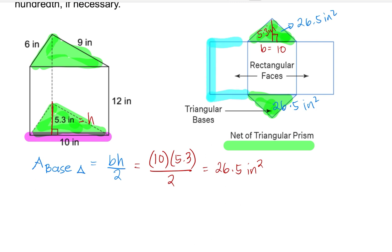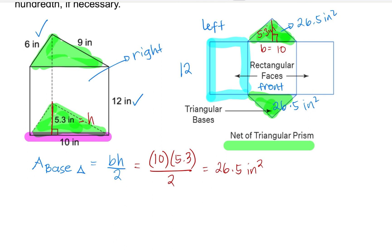One side is a rectangle. Let us label them. The height of this rectangle is 12. The sides have different measurements, so let us label these as the left side, the front — which is the side we are facing — and then this right here would be the right side.